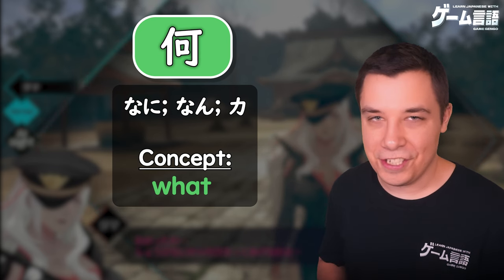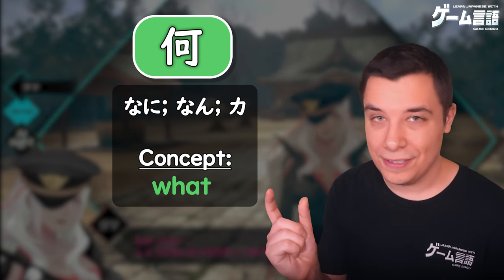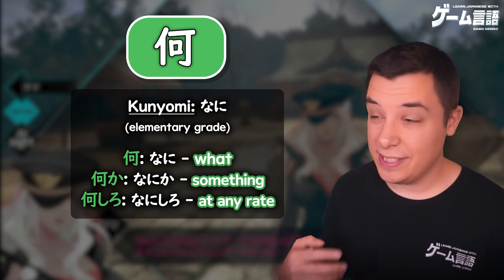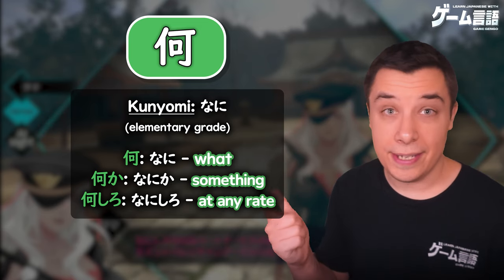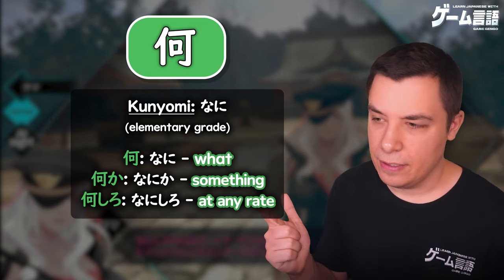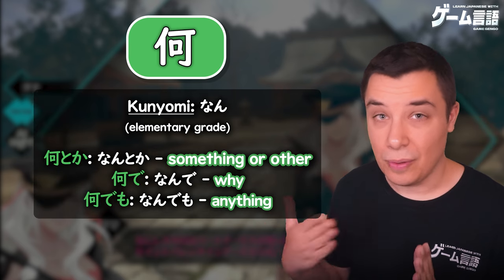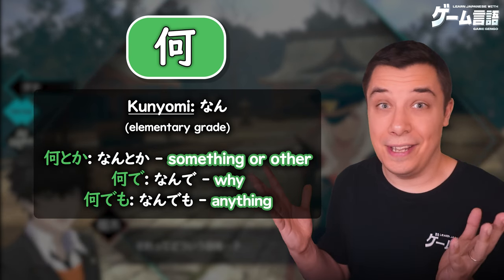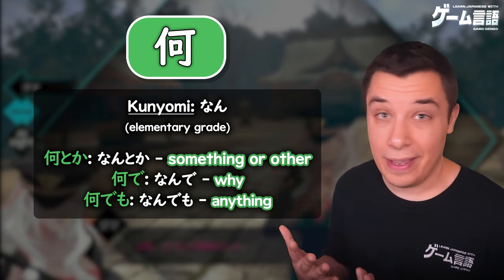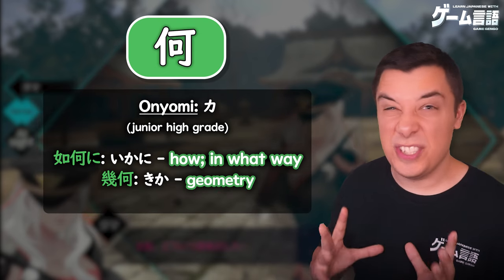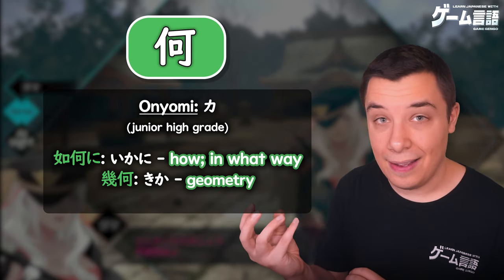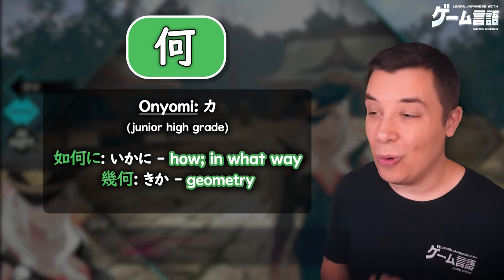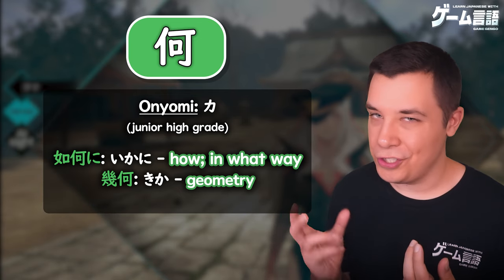And there you have it — the kanji for 'what' in Japanese: Nani. You can see it used in words like Nani (what), Nanika (something), Nanishiro (at any rate), Nantoka (something or another), Nande (why), and Nandemo (anything). And then used at a junior high level with Ka, like Ikani meaning 'how or in what way', or Kika for 'geometry'.